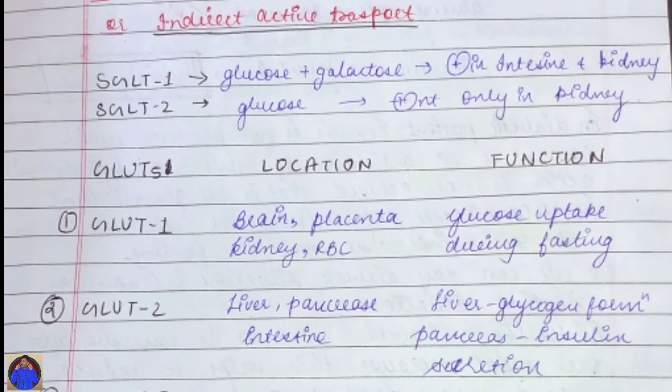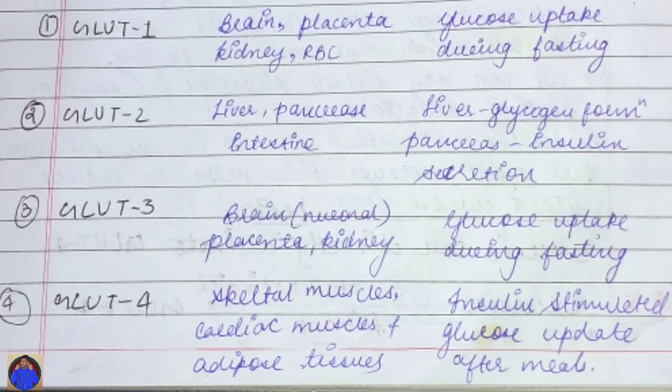Now we will discuss the GLUTs, which are very important and frequently asked in exams. GLUT1 is located in the brain, placenta, kidney, and RBCs, and its function is glucose uptake during fasting. GLUT2 is located in the liver, pancreas, and intestine; its functions are liver glycogen formation and insulin secretion from the pancreas.